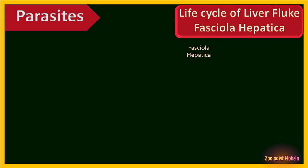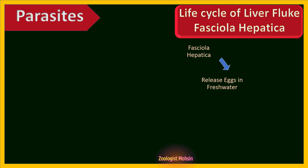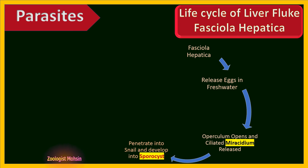Fasciola hepatica has one of the most complex life cycles among all living organisms. Starting with the egg: when it reaches fresh water, the operculum opens and a ciliated larva called miracidium is released freely. The miracidium swims until a snail host is found, then penetrates into it, loses its cilia, and develops into a sporocyst. Sporocysts are bag-like with embryonic cells.